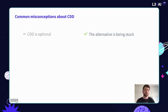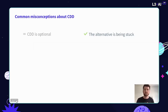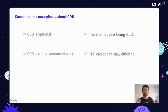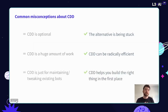I want to touch on a couple of common misconceptions about CDD. The first is that CDD is optional or a nice-to-have. It's not — it's absolutely essential. The alternative to practicing CDD is just being stuck with circles that don't overlap, building stuff that doesn't help your users. The second misconception is that CDD is a huge amount of work — that reviewing and annotating isn't scalable. I want to talk about the work we're doing to make CDD extremely efficient. And finally, the idea that CDD is just a process for tweaking existing bots. You want to be practicing this at the start — if you're only introducing it later, you're kind of missing the point.